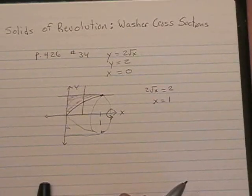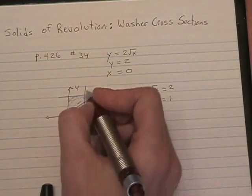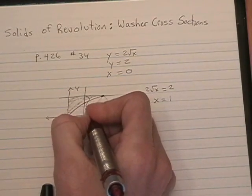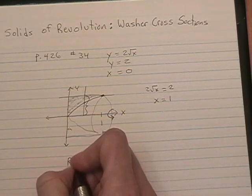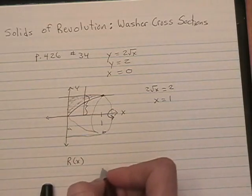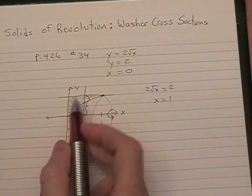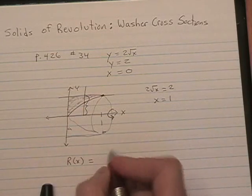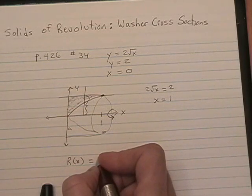The outer radius is going to be this distance here. We're going to call that big R, capital R of x. And we're lucky because what's this distance? Well, that's just 2. y equals 2.